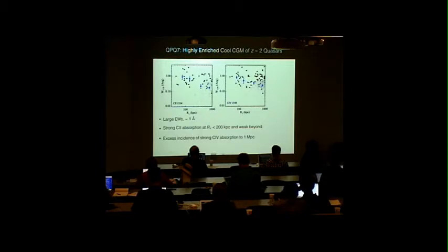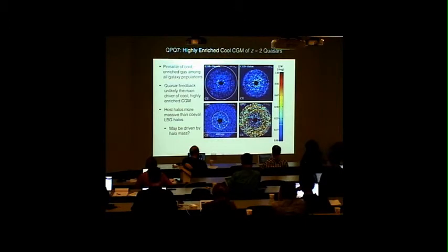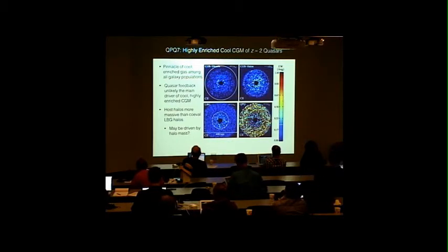We conclude that the redshift-2 quasars are enveloped in highly enriched cold CGM. These are equivalent width maps of carbon-2-1334 in absorption. Again, we see a much higher incidence of strong carbon-2 absorption in the QPQ population. So we conclude that the QPQ population marks the pinnacle in cool and enriched CGM. Because the proximity effect is absent in the transverse direction, we speculate that quasar feedback is unlikely to be the main driver of this cool and highly enriched CGM. And we note that these quasar host galaxies live in more massive halos than their co-eval R-perp galaxies such as redshift-2 Lyman-break galaxies. We speculate the cool CGM may be driven by halo mass predominantly.